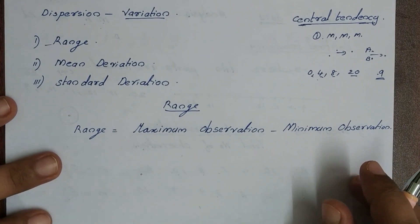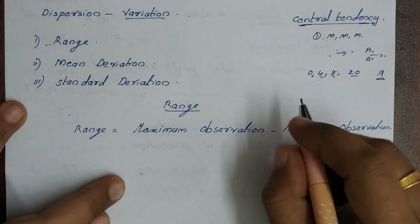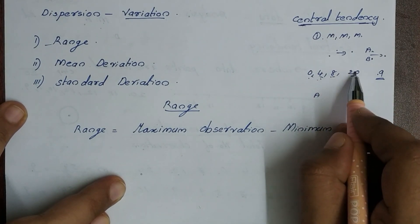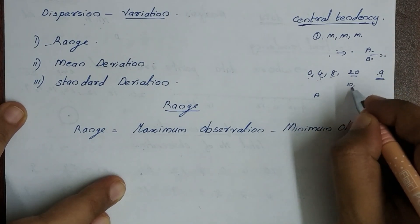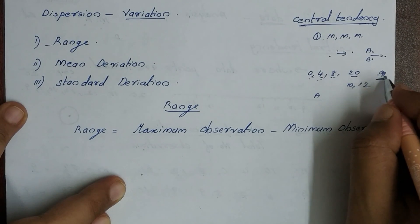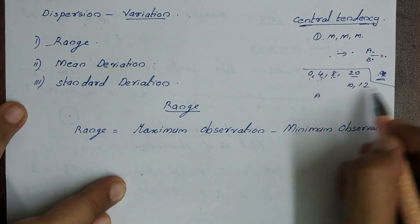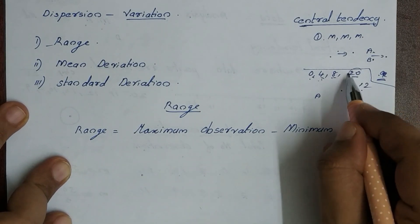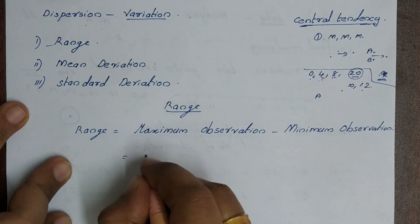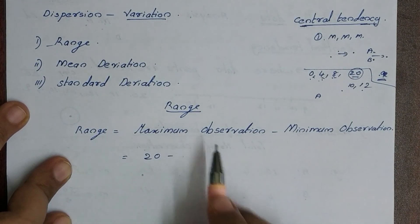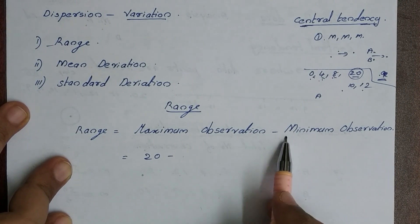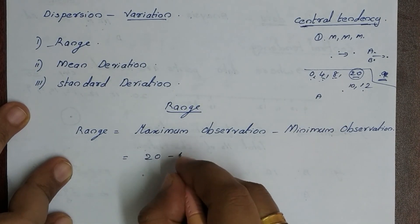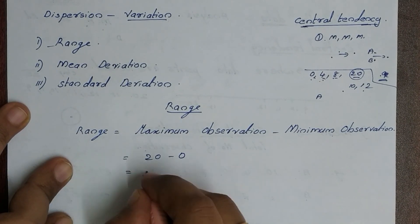For Student A, the marks are 0, 4, 8, 20, 10, 12. Range equals maximum observation minus minimum observation. Maximum observation is 20, minimum observation is 0. So range is 20.